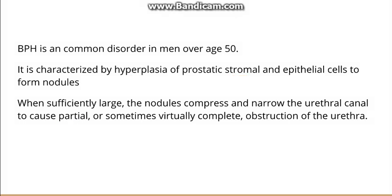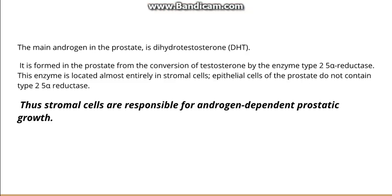Going to the etiopathogenesis of BPH. The main androgen present in the prostate is dihydrotestosterone. This dihydrotestosterone is formed from testosterone by an enzyme known as type 2 5-alpha reductase. This enzyme is present entirely in the stromal cells, and the epithelial cells of the prostate do not have this enzyme. Therefore, the stromal cells are responsible for conversion of testosterone into dihydrotestosterone, which is the main potent androgen and therefore responsible for androgen-dependent prostatic growth.